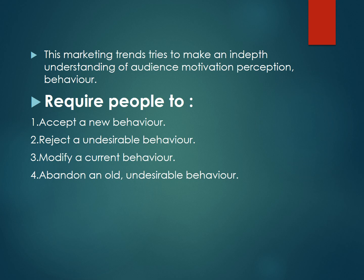The second goal is to reject an undesirable behavior — for example, smoking, which is injurious to health. Social marketing tries to bring about the behavioral change where a person rejects smoking, takes up a different mindset against smoking, and completely gives up smoking.